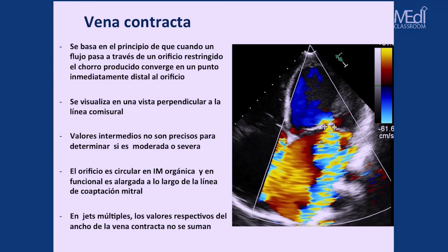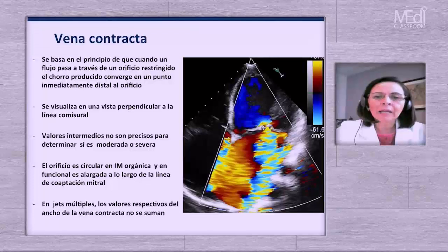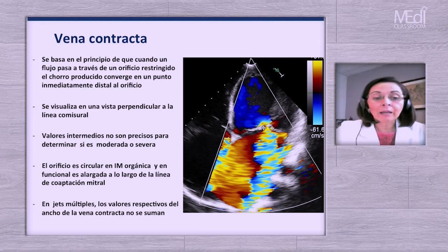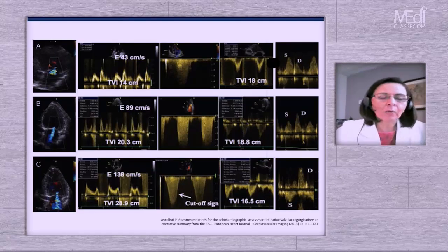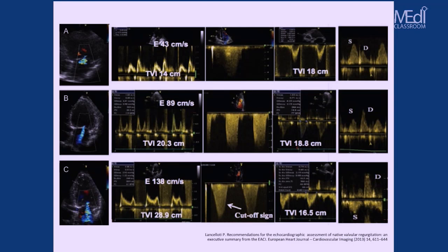La vena contracta se basa en el principio de que cuando un flujo pasa a través de un orificio restringido, el chorro converge en un punto inmediatamente distal al orificio. Debe visualizarse en vistas perpendiculares a la línea comisural: eje largo paraesternal y apical de cuatro cámaras. Valores menores de 3 mm son ligeros; mayores de 7 u 8 mm en medición biplanar se consideran severos. El orificio es circular en insuficiencia orgánica y alargado a lo largo de la línea de coaptación en la funcional. En jets múltiples, los valores del ancho de vena contracta no se deben sumar.